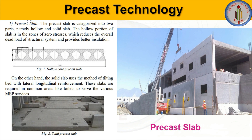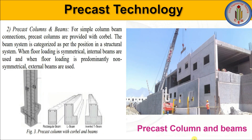Let's look into precast concrete elements. First is the precast slab, which is divided into two parts: hollow slab and solid slab. The hollow portion of the slab is provided in zones of zero stresses, which reduces the overall dead weight of the structure and provides better insulation. The solid slab uses a tiling bed method with longitudinal reinforcement. These slabs are required in common areas like toilets, utility areas, and balconies to serve various MEP services.